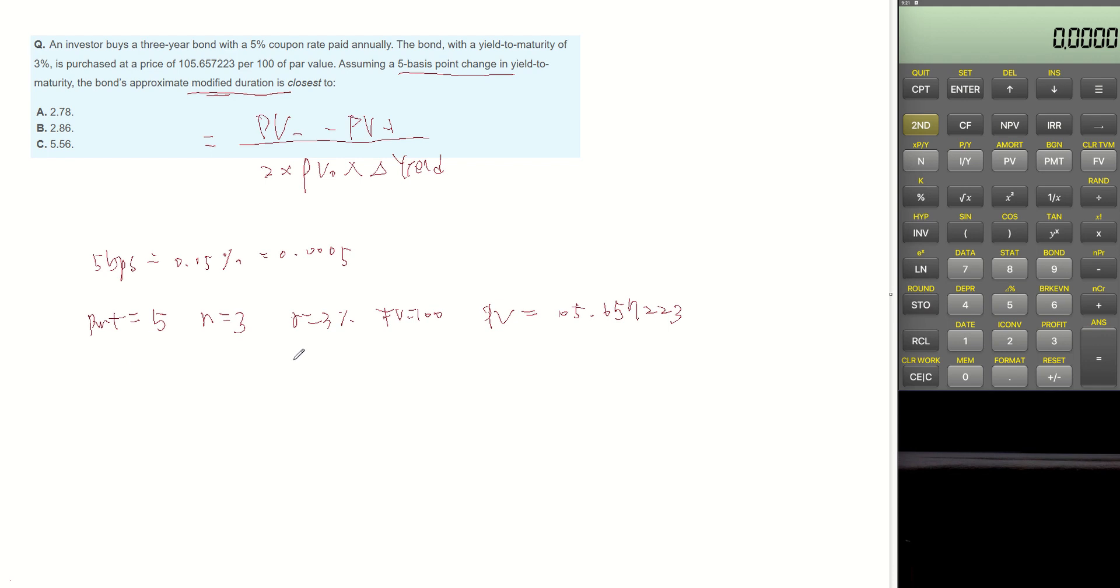Now we want to know what is the present value when R is changed to 2.95% and R is changed to 3.05%. Let's calculate when R is 2.95% first. The frequency is 3 and the interest is 2.95%.